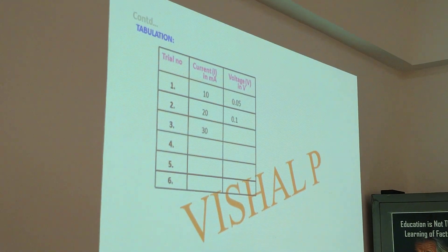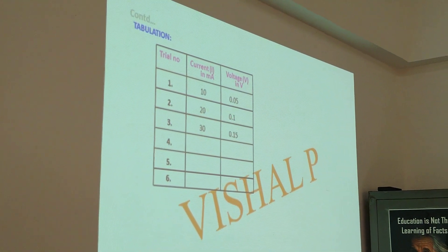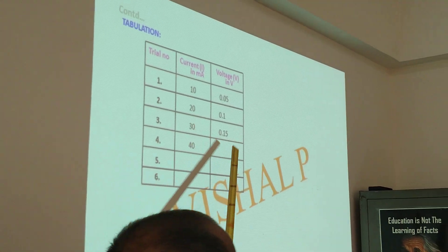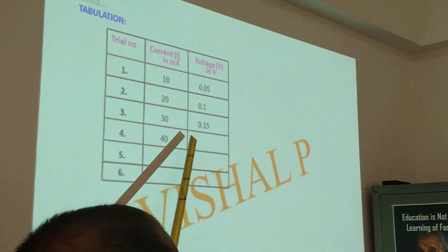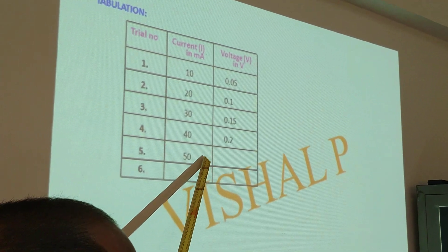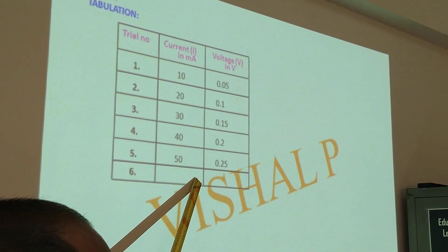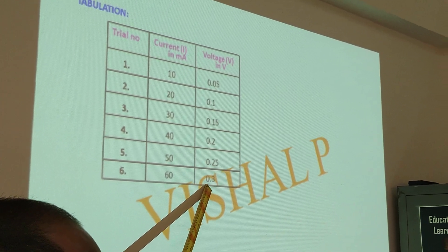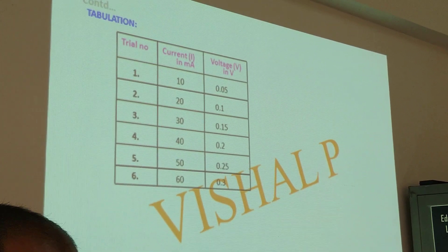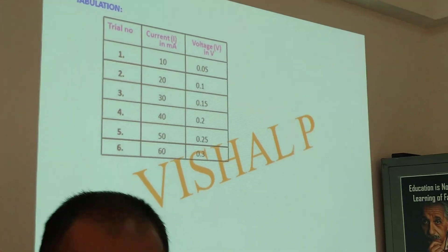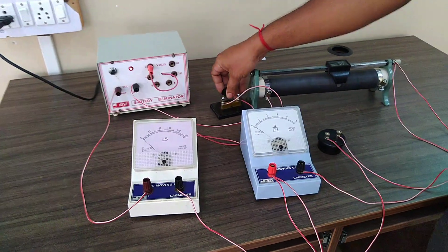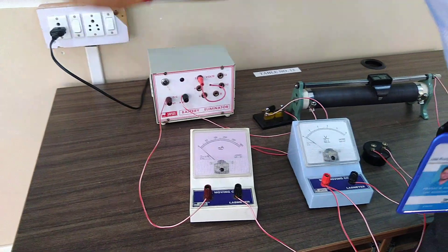Already I have performed the experiment and got the values. For 30 milliampere, I got 0.15 volt. For 40 milliampere, I got 0.2 volt. For 50 milliampere, 0.25 volt. For 60 milliampere, I got 0.3 volt. After performing the experiment, your first work is to remove the key and turn off the plug. Then you will do the calculations.